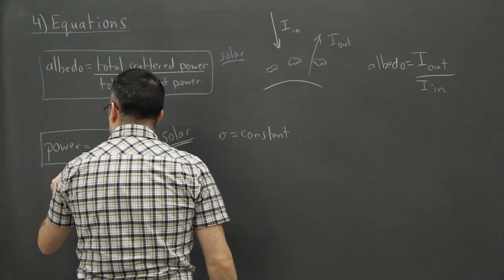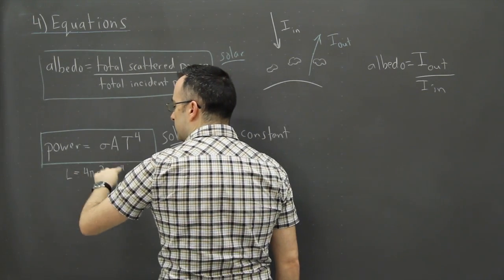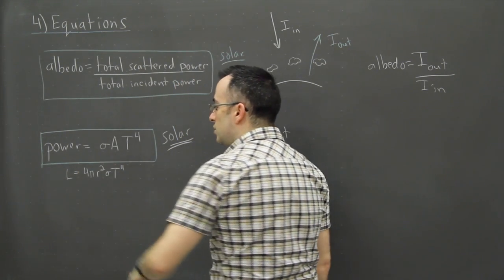So we actually say L equals, and we normally say 4πr²σT⁴. That's normally how we write this in astrophysics at least. We normally say this. You'll see it's actually the same thing.